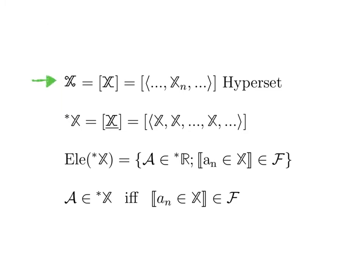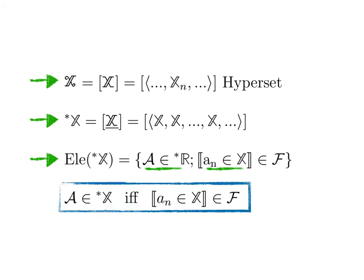If curly X is defined as the equivalence class of a sequence of sets X_n, then star X is defined as the equivalence class of a constant sequence. The listing of the elements in star X is then defined by all elements a such that a_n belongs to X almost everywhere, which is consistent with the definition of star X we gave earlier when we talked about the enlargement of a set. This symbol should really be written using the new circle notation.